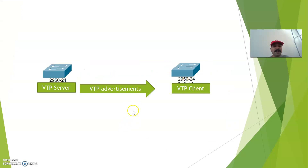So what is VTP? VTP is a VLAN trunking protocol used for sharing VLAN information across all the switches in the same VTP domain. The VLAN information is always transported from server to client in the form of VTP advertisement.